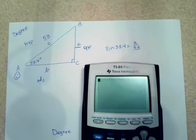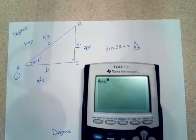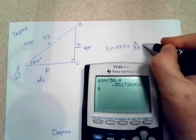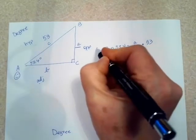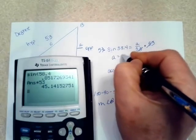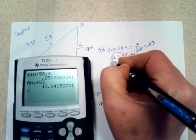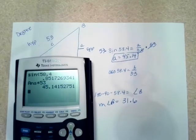So the sine of 58.4 equals A over 53 equals opposite over hypotenuse. So I'm going to go to my calculator. I'm going to go in and change this to degree mode. As I switch to degrees, and then I'm just going to put my problem in here, sine of 58.4. And I know that to get rid of that 53 over here, I should multiply both sides by 53. So I'm just going to go ahead and multiply that answer by 53. And A is 45.14 if you're rounding it to the nearest hundredth. If you're rounding it to the nearest tenth, it's 45.1.